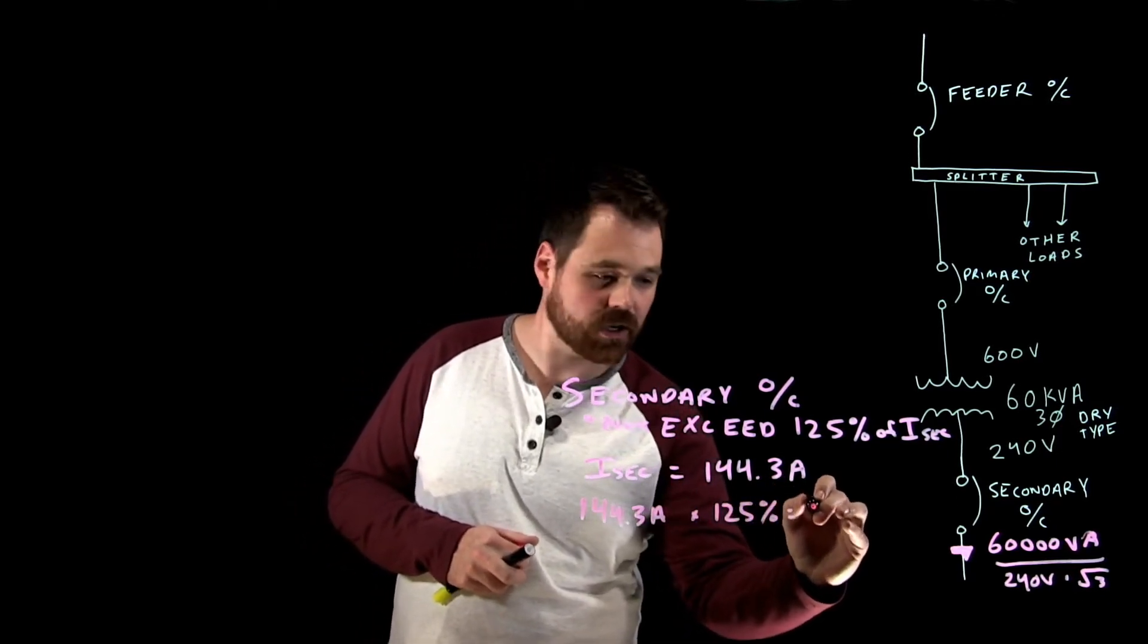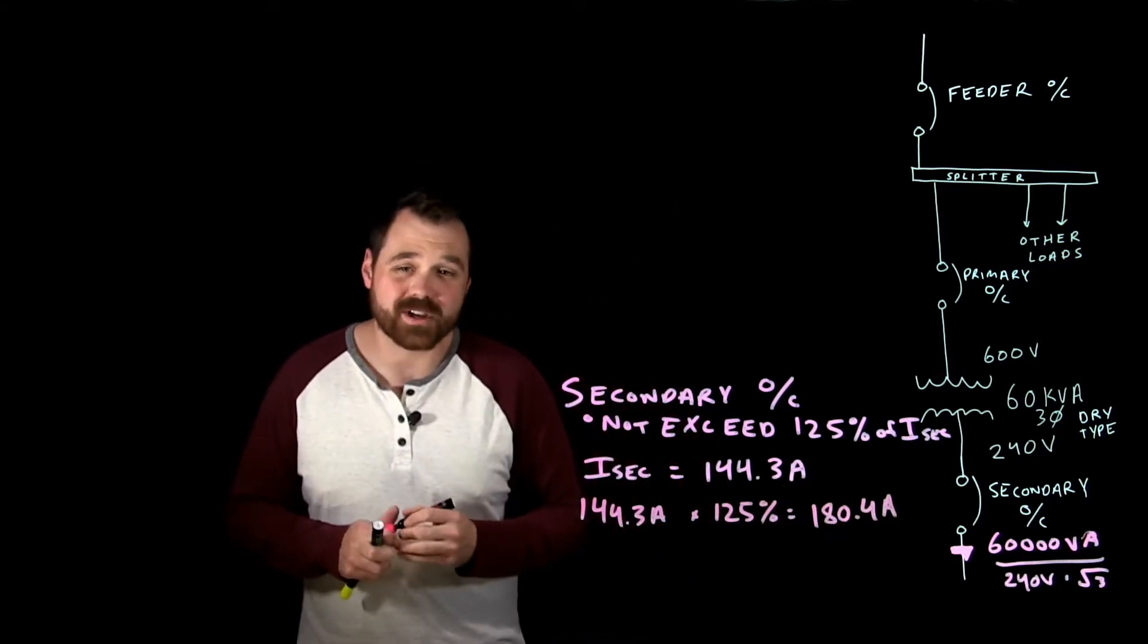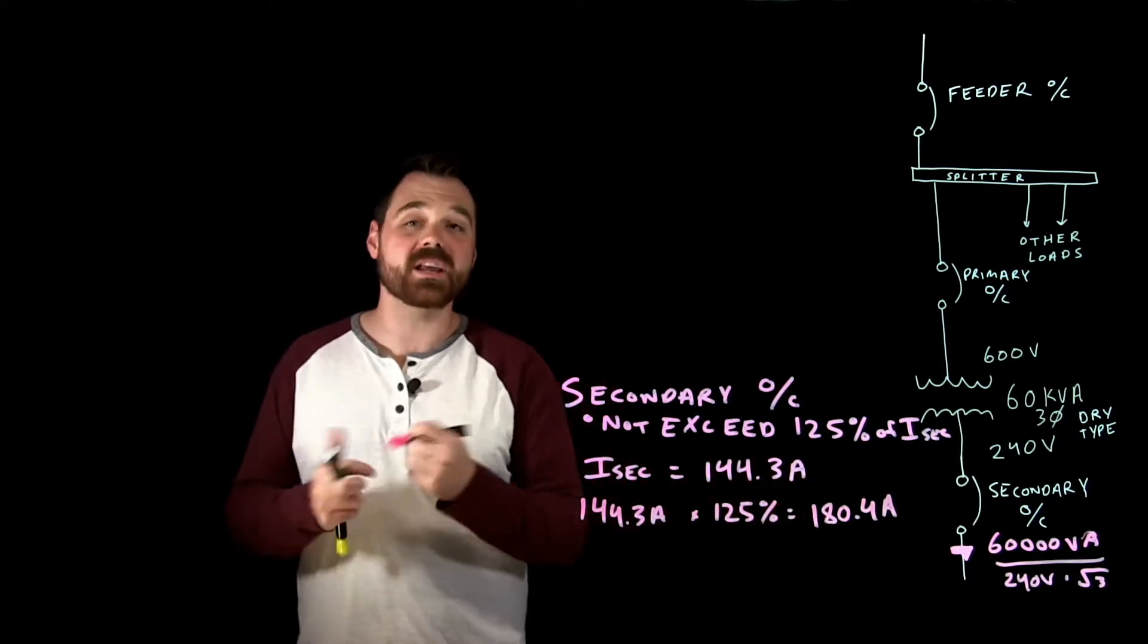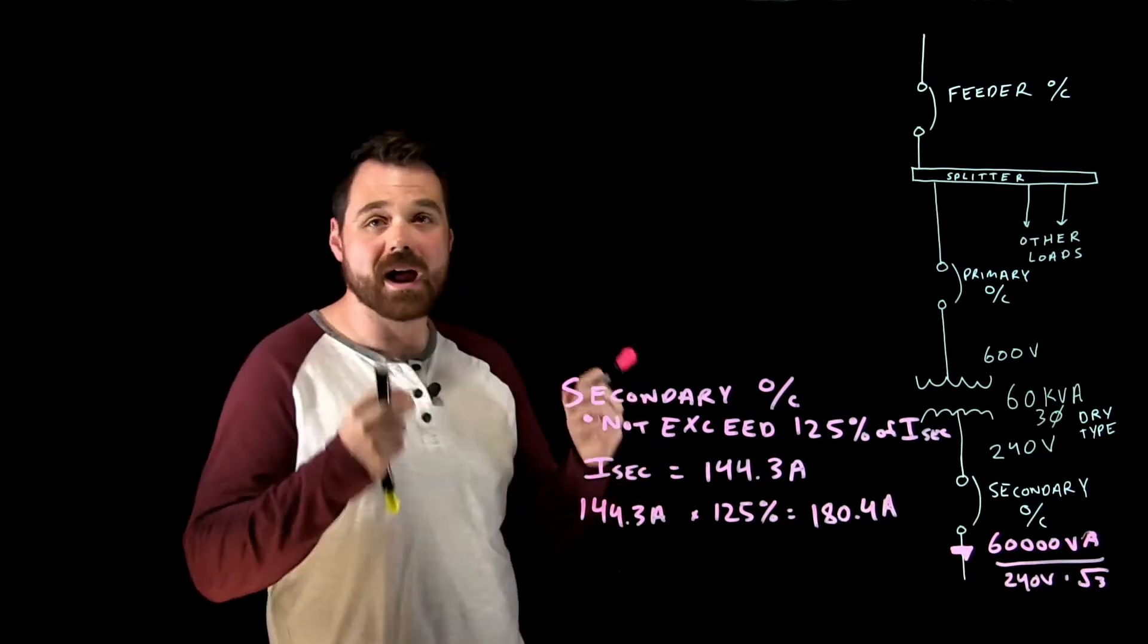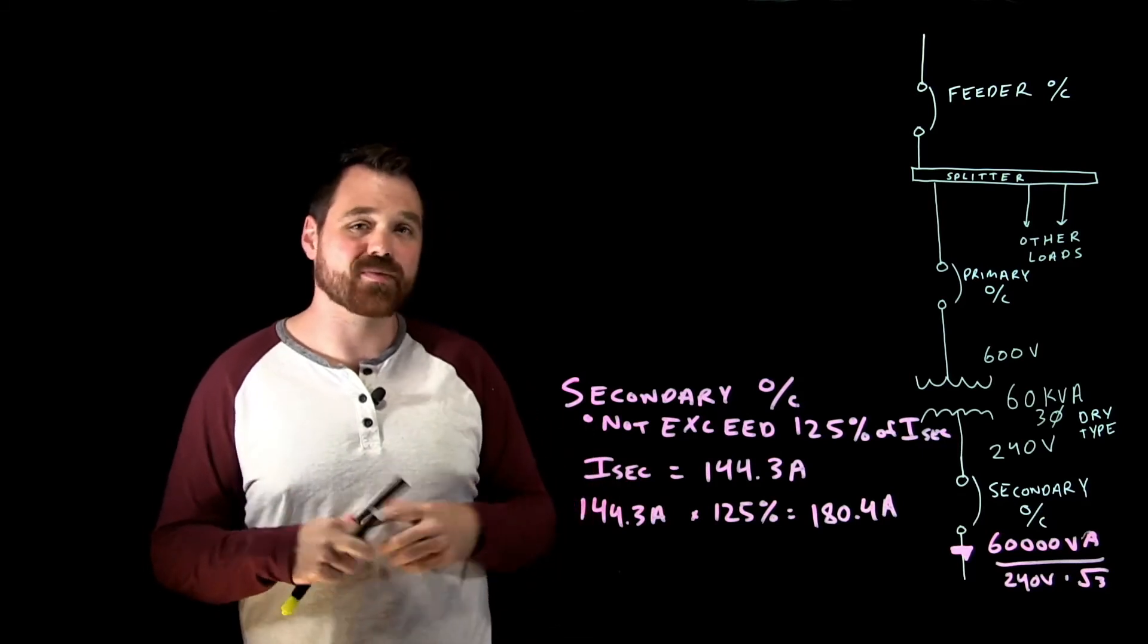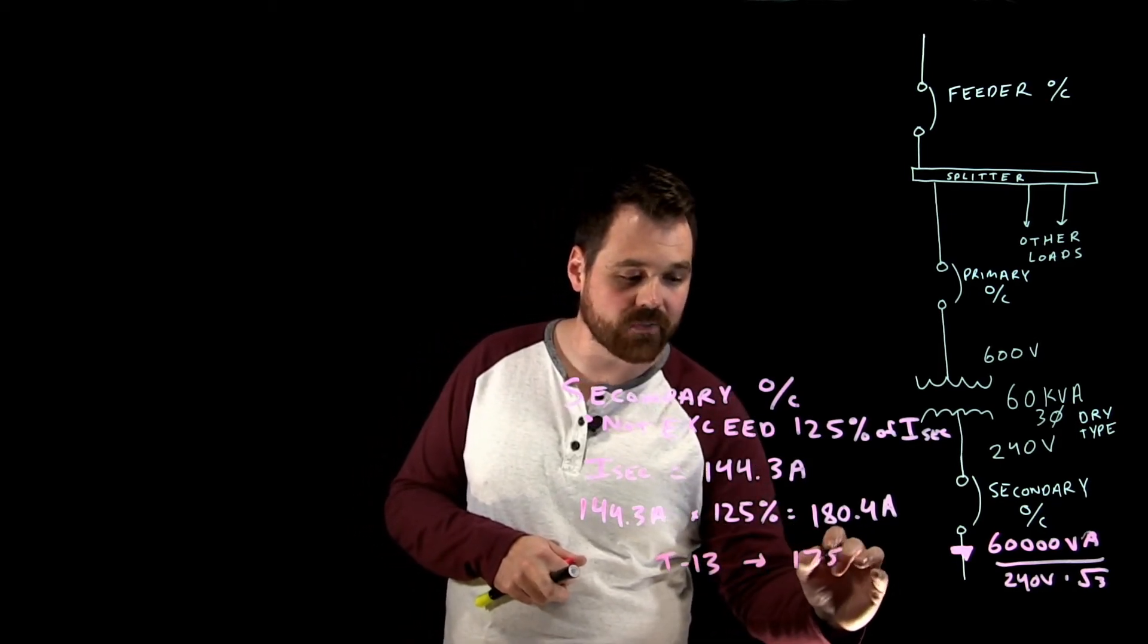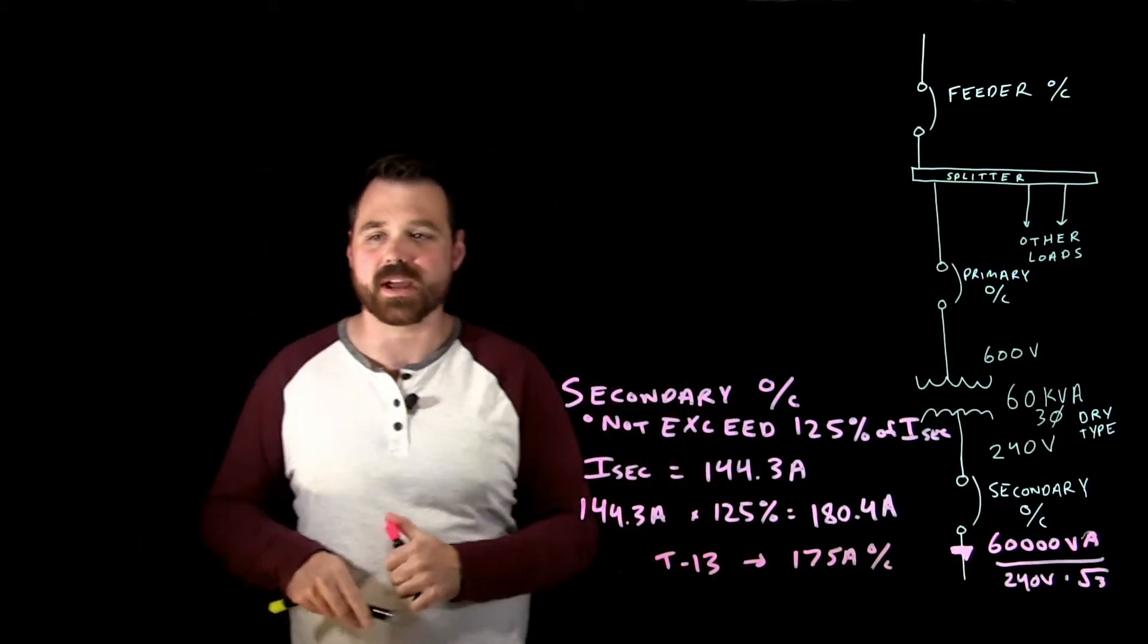Now the trick here is the wording. It says the overcurrent device shall not exceed 125 percent, meaning if I go to the store and there's not a 180.4 amp overcurrent device available I have to go to a smaller size. So if you're using based off of table 13 this would mean I would be in a 175 amp overcurrent device.